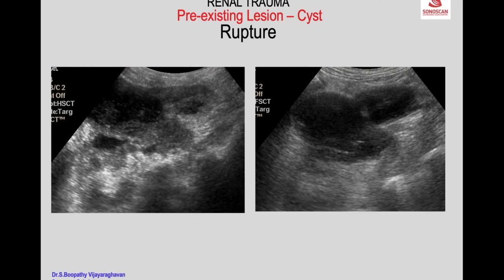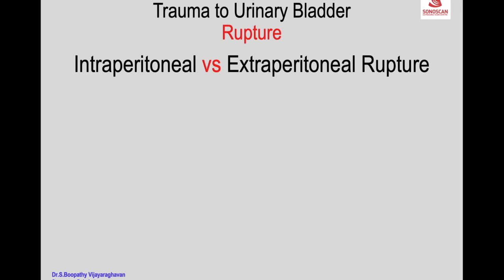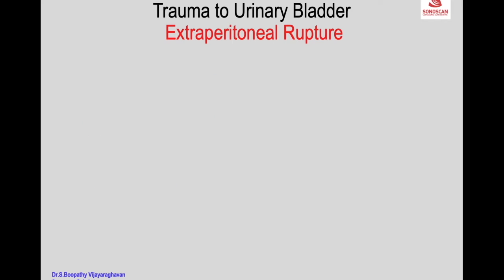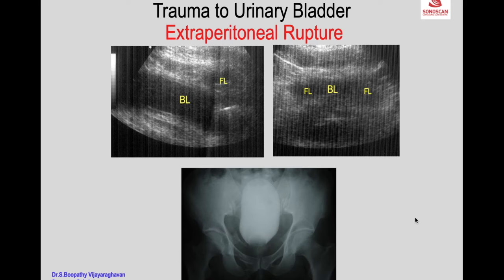The cyst can rupture into the peritoneal cavity, which is common and happens in 80% of cases. Regarding intraperitoneal versus extraperitoneal bladder rupture, the dome of the urinary bladder tends to include intraperitoneal rupture. Extraperitoneal rupture is associated with injuries causing fracture of the bony pelvis or drop of the bladder.